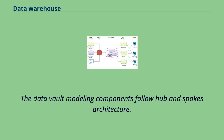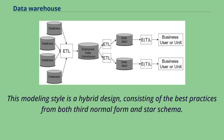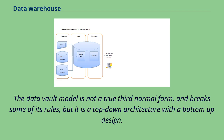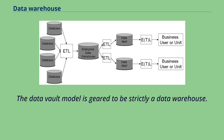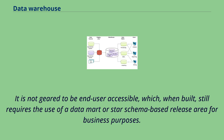The data vault modeling components follow hub-and-spokes architecture. This modeling style is a hybrid design consisting of the best practices from both third normal form and star schema. The data vault model is not a true third normal form and breaks some of its rules, but it is a top-down architecture with a bottom-up design. The data vault model is geared to be strictly a data warehouse and is not geared to be end-user accessible, which still requires the use of a data mart or star schema-based release area for business purposes.